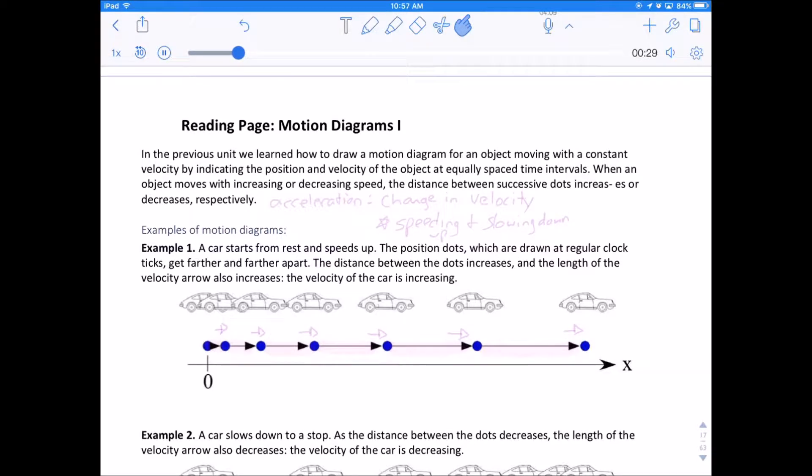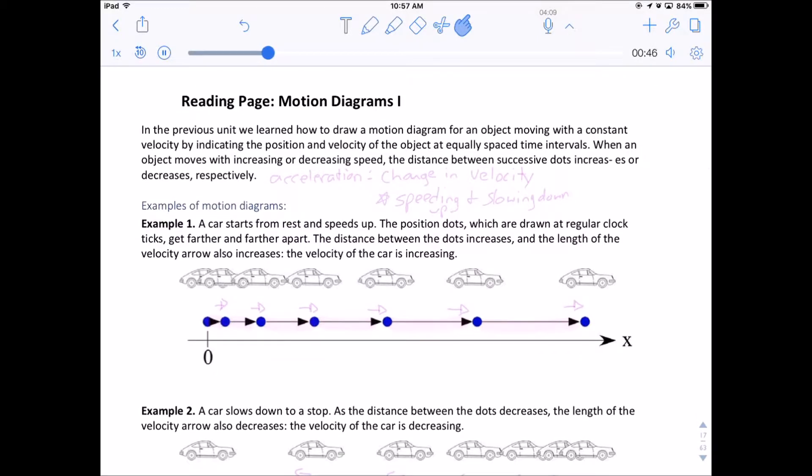So this is the reading page. In this one we're looking at when the speed changes. In uniform motion, our last unit, all we looked at was the same speed the whole time. And so we had either short arrows or long arrows or arrows in between. And a couple of times we had it go from being fast to being slow, but the arrows were the same for a period of time.